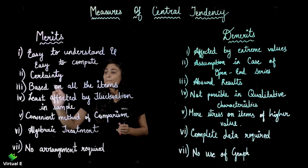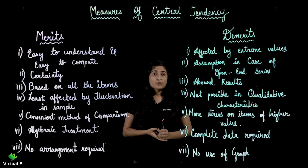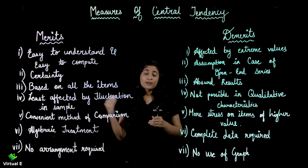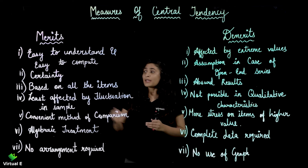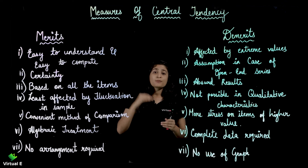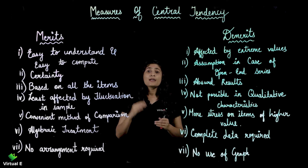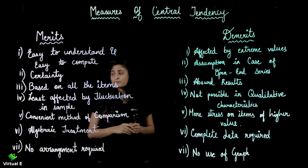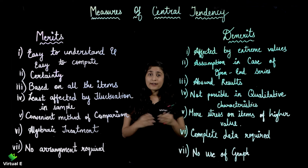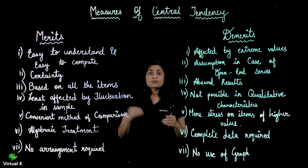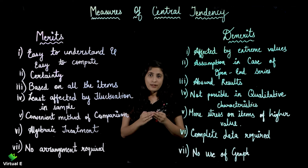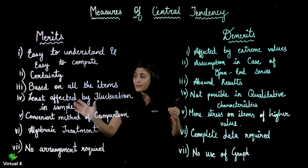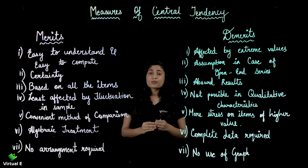The next point is based on all the items. You are given a number of observations and you have to consider all the observations in the sample. If you are given a large entire data set, some things set off, so your mean is least affected when you take larger samples. Therefore, mean is considered a stable measure, and it helps in calculating large samples.